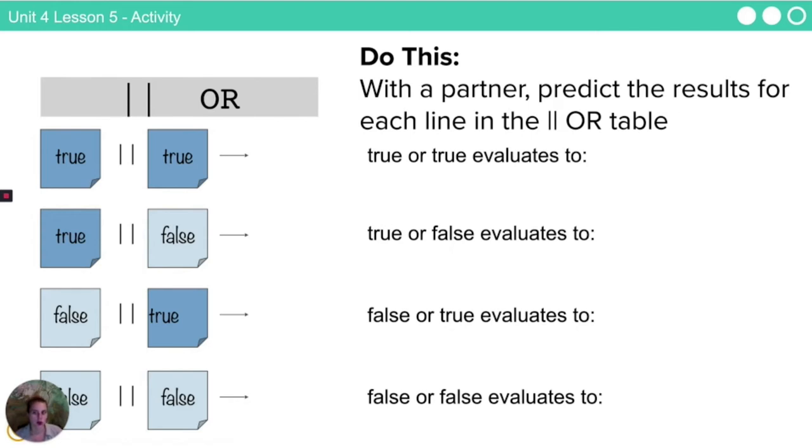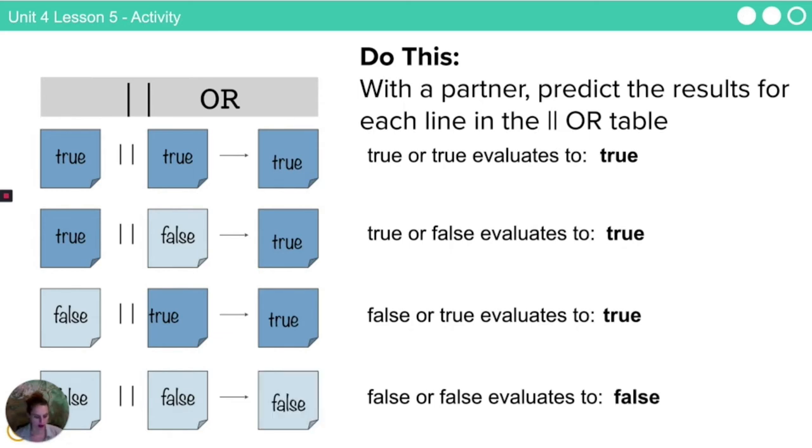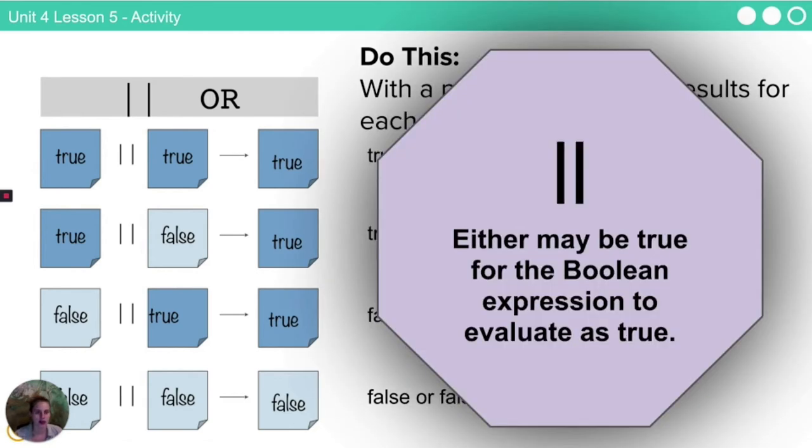Okay, so if I have a true or another true, the whole expression evaluates to true. If I am a true statement or a false statement, the whole expression evaluates to true because at least part of it was true. The same is correct for a false or true statement. And if something is false or another thing is false, no part of that is true, then that evaluates to false. Another way to think about this is that if you have an or statement, either may be true for the Boolean expression to evaluate as true. So as long as there is one true portion of the statement, the or statement evaluates to true.